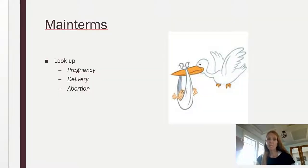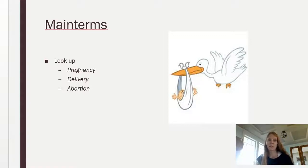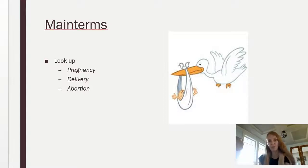When we're coding pregnancy, the key terms you want to look up — the main terms — are going to be pregnancy, delivery, or abortion. Once there, you would go to pregnancy complicated by, or pregnancy management affected by, then delivery and abortion as subterms under the main term. Make sure to check carefully for what it is you're coding.